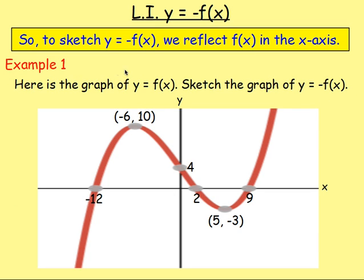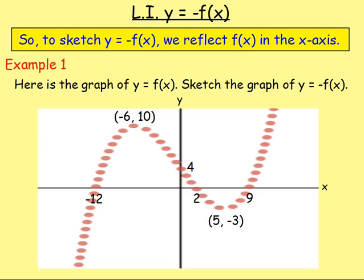Let's try this with an example then. So example one of two. Here is the graph of y equals f of x. Sketch the graph of y equals negative f of x. So we've got this line drawn in here, that is f of x, and we've got these points on the graph. So to sketch negative f of x, change that to a dotted line,